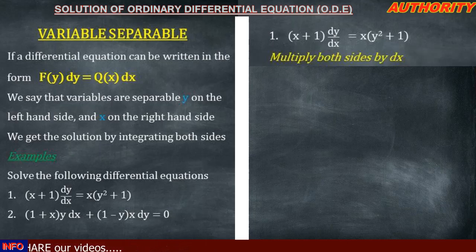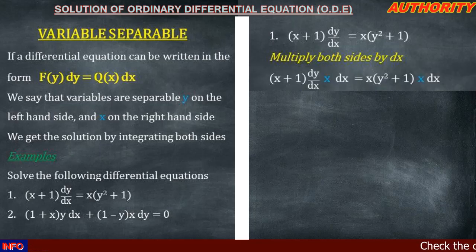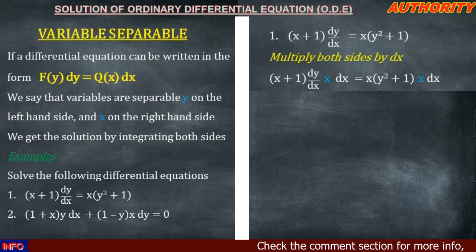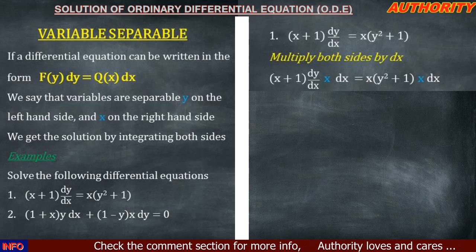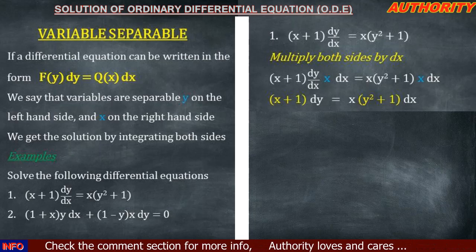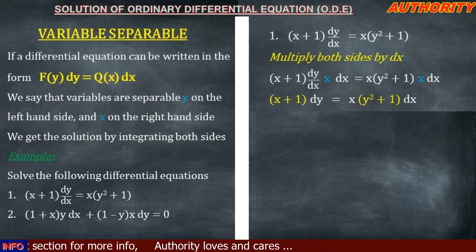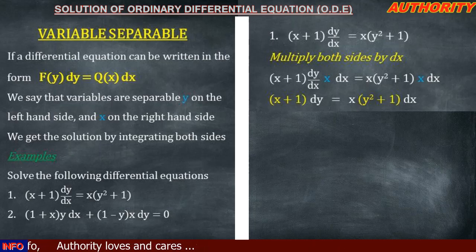The first thing we do is multiply both sides by dx. When we do so, we get (x + 1) dy = x(y² + 1) dx. Now the next thing we are going to do is to separate the variables.